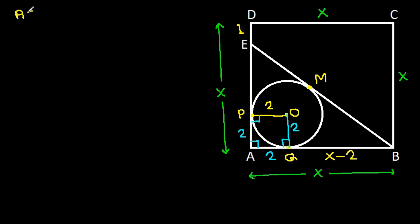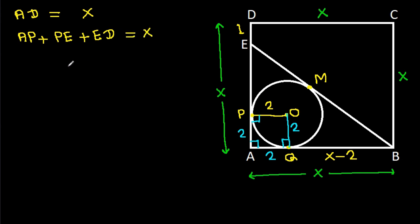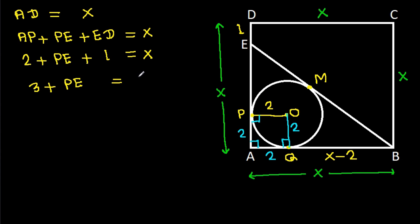We have AD is X, and AD equals AP plus PE plus ED. So X equals 2 plus PE plus 1, which gives 3 plus PE equals X. Therefore PE equals X minus 3.